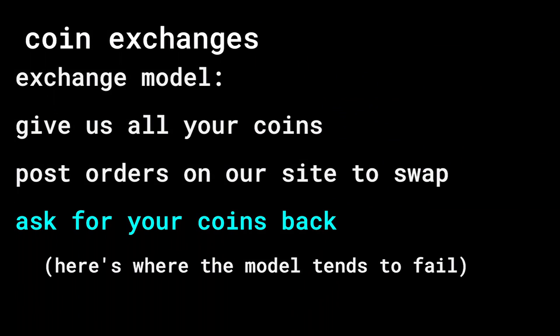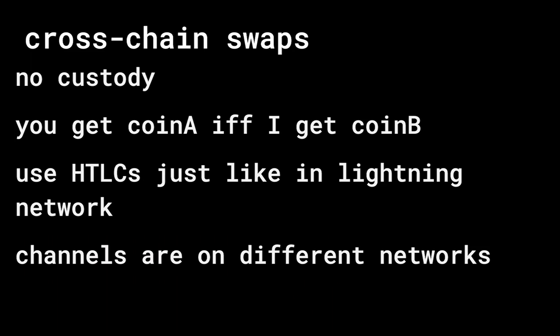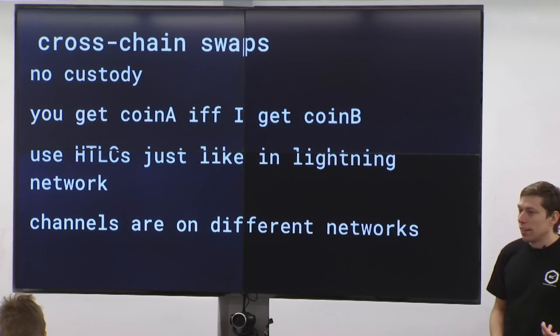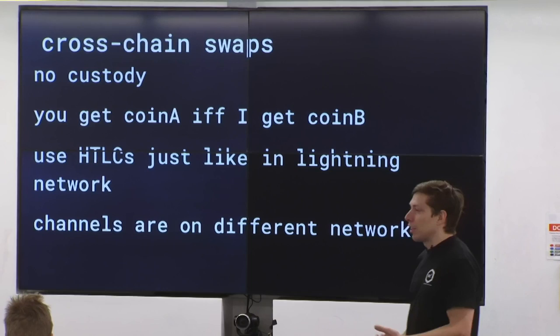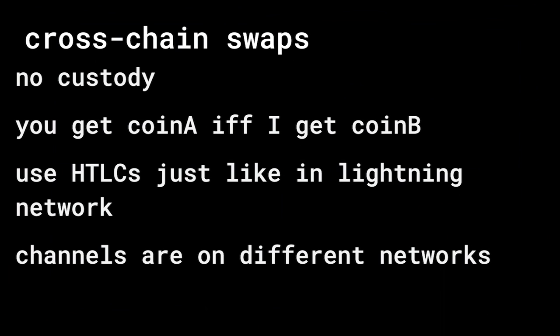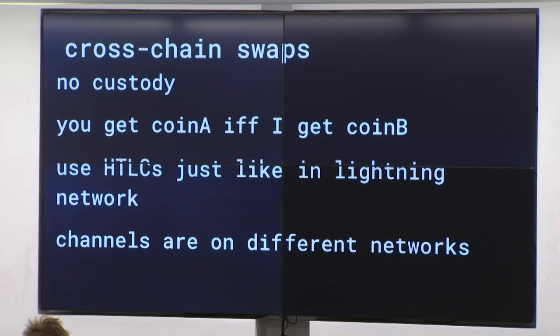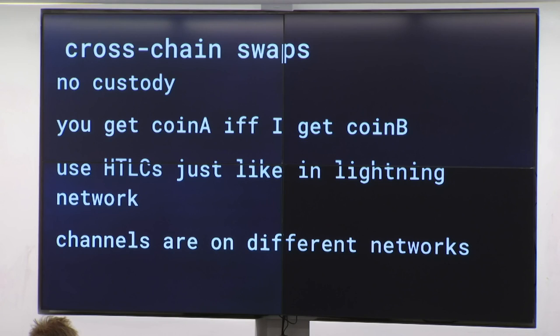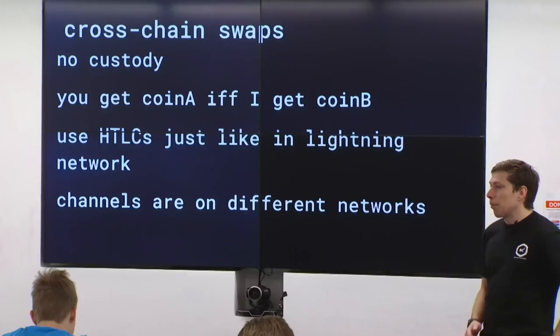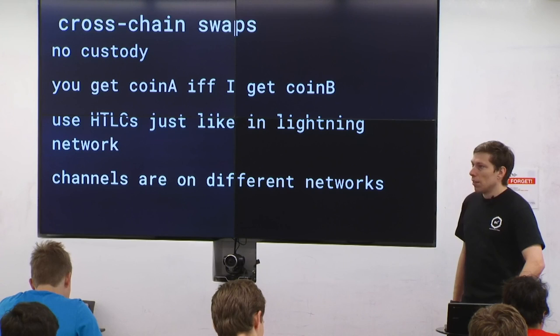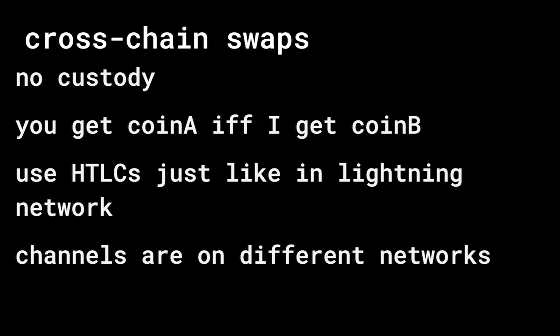The idea is: wouldn't it be cool if we could have cross-chain swaps, where I've got a bunch of coin A, you've got a bunch of coin B, and we can swap between them without giving custody to some third party or even to each other? You can do this using hash time lock contracts, just like in the Lightning Network. You get this coin if and only if I get this other coin — you want them to be atomic, with no period of time where one party has all the assets.